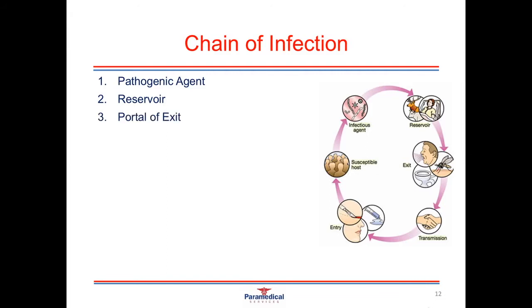The third link is the portal of exit — the pathogenic agent must move from one reservoir to another, exiting via the respiratory tract, intestinal tract, sexual contact, open wounds, or blood and bodily fluids. The fourth link requires an environment conducive to transmission — through direct contact, indirect contact, or droplet transmission. The fifth link is a portal of entry into the new organism, such as the respiratory tract, intestinal tract, sexual contact, open wounds, or mucous membranes like the eye or mouth.